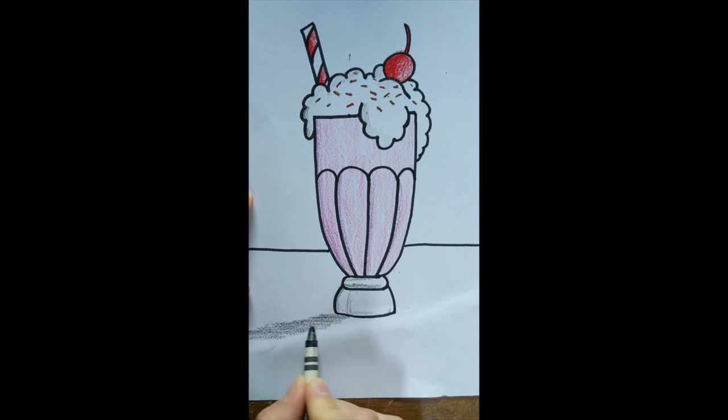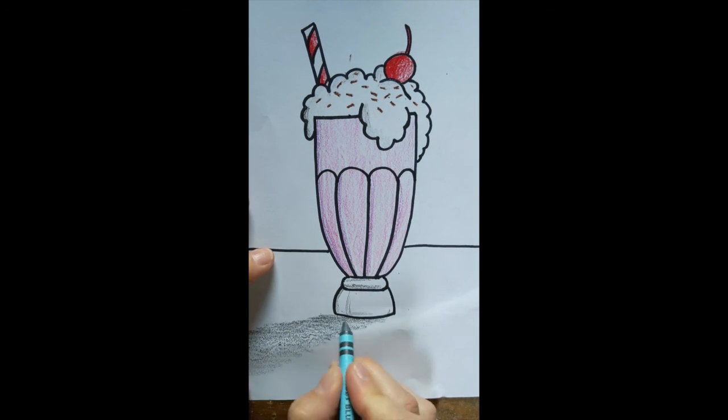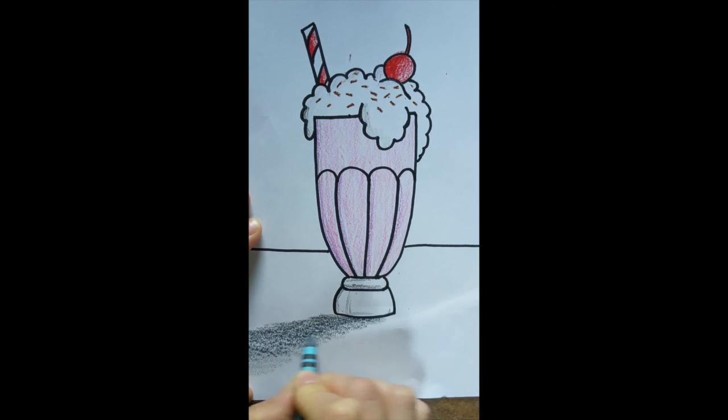And sometimes shadows aren't always just a dark color. Sometimes you can see blues or purples in shadows to help make them look a little bit more interesting in pictures. I'm just adding a little bit of blue in my shadow. Sometimes that's the sky kind of reflecting in this glass here. Adding some blue.